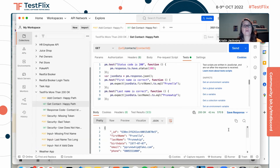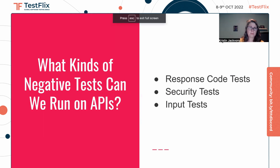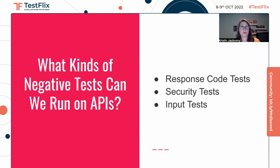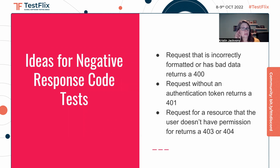Now that we understand how those work, we can start looking at some negative tests. So what kinds of negative tests can we run on APIs? We can run response code tests, which means if something goes wrong, we're checking to make sure we're getting the appropriate response code. We can run security tests, meaning that only authenticated and authorized users should be able to get or add information. And then we can also run input tests, meaning that we can't input incorrect or invalid information and we get an appropriate response if we try to do that.